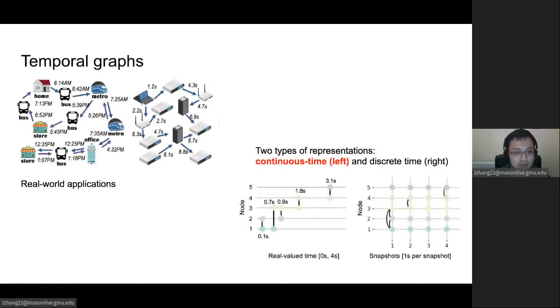First, about temporal graphs. You can see in real-world applications such as transportation graphs and also IP networks, there are discrete time on the left and continuous time on the right. We will focus on the real-valued continuous time, which is the full representation of all complete information.